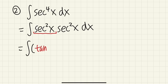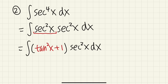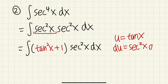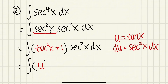This way we can do a u-substitution, because this is an expression in terms of tangent x. Let u equal tangent x, so du equals secant squared x dx — and that is right here. So this becomes the integral of (u squared plus 1) du.